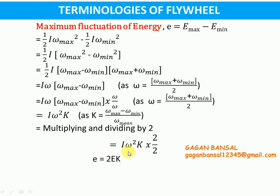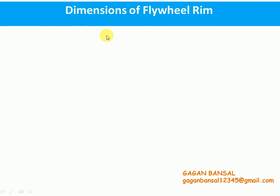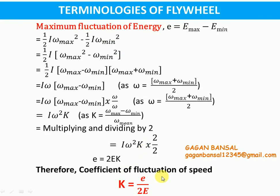Therefore, the coefficient of fluctuation of speed K can be written as e / (2E), where small e is the maximum fluctuation of energy and capital E is the energy at mean speed. So we are clear with maximum fluctuation of energy as well as the coefficient of fluctuation of speed. The formula is: K = e / (2E).